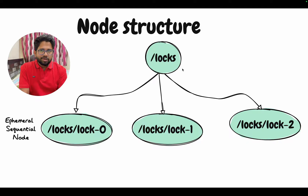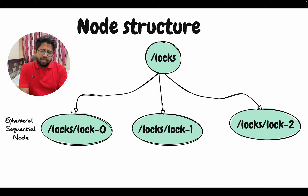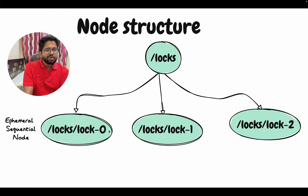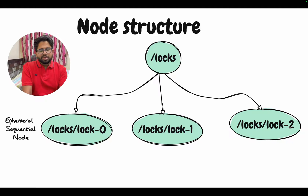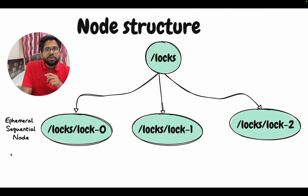We will create a node called slash locks in the Zookeeper tree, and within that tree we will have multiple children: slash locks slash lock-0, slash lock-1, slash lock-2. We will have multiple children and these will be created using ephemeral sequential nodes. If you are not able to recall what these are, please go back and see the video on the data modeling concepts of Zookeeper.